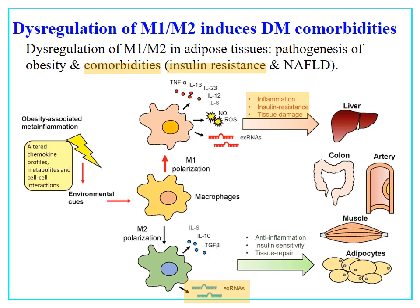M1 macrophage polarization leads to insulin resistance and tissue damage. However, if the macrophage of adipose tissue goes to the M2 pathway, the M2 macrophage will produce IL-10 and TGF-β and will promote anti-inflammation, insulin sensitivity, and tissue repair.